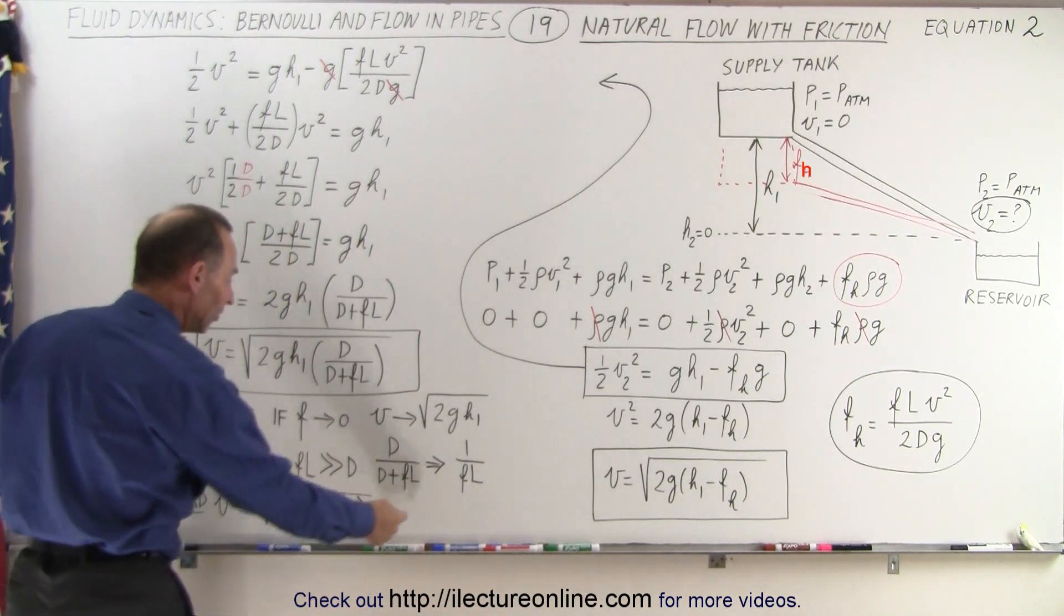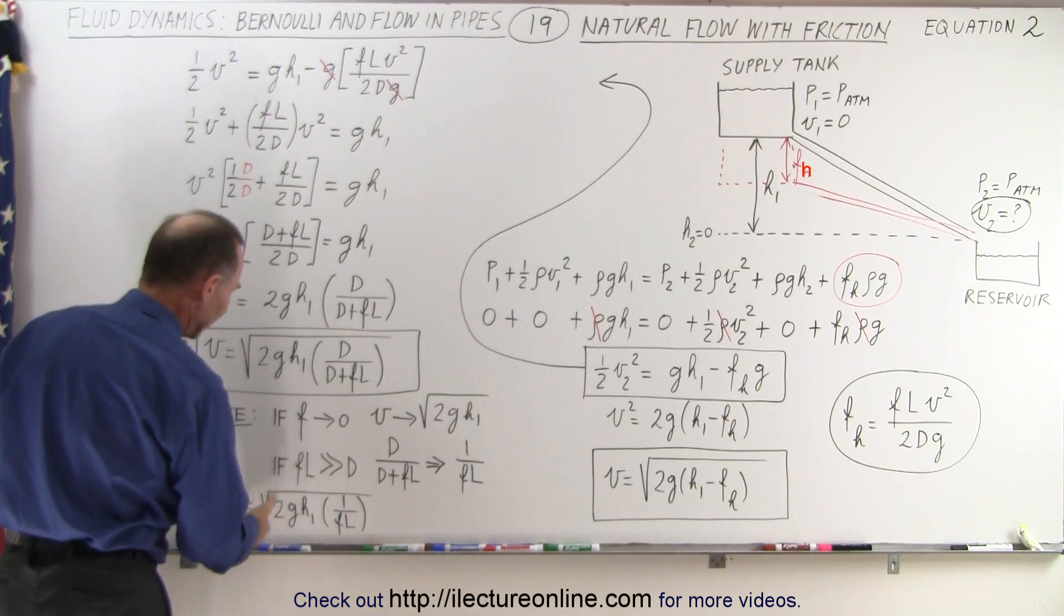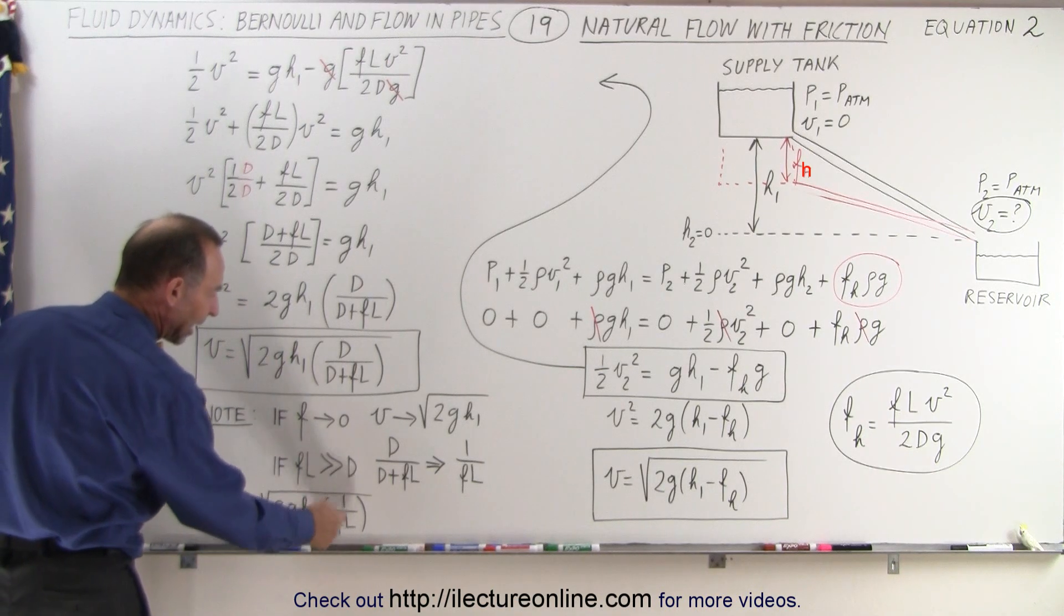And so if we replace this by 1 over f times l, notice that in the limit, the velocity will be approximate to the square root of 2gh times 1 over fl.